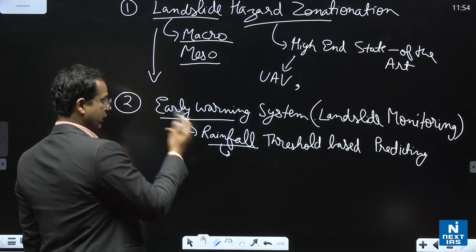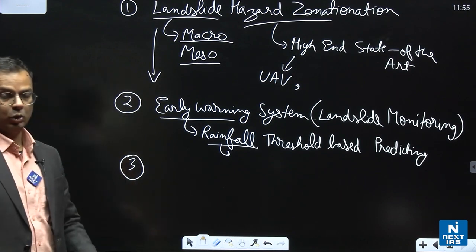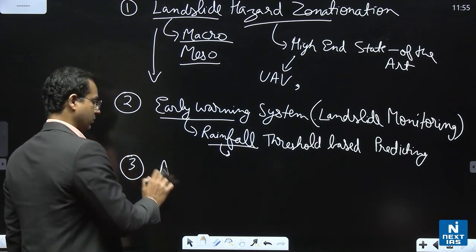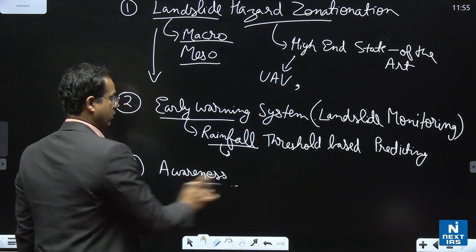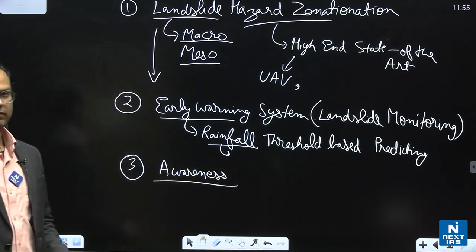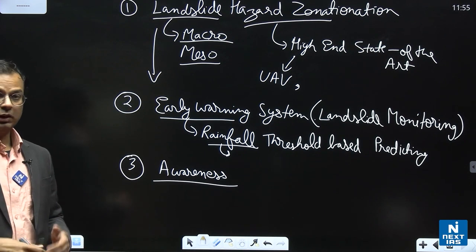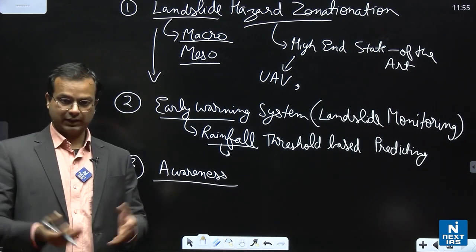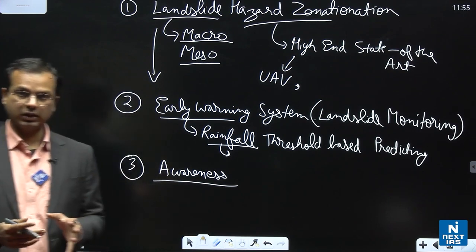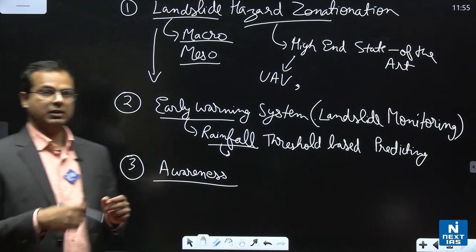Then after early warning, if you have early warning but people are not aware, then there is no solution. There is no point in having an early warning if the people are not aware. So the third point is obviously awareness generation in the people. The local community is the one, is the first one to respond to any disaster. If they are aware how to respond to a disaster, the response will be better.